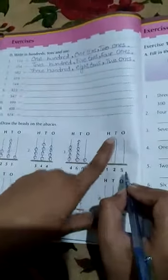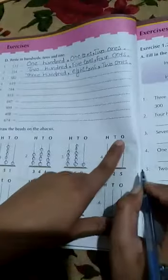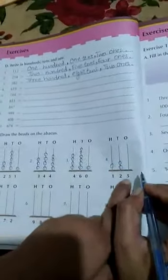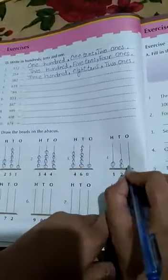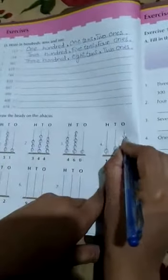Hundreds, tens and ones. Hundreds, how many are? One. Tens, how many are? Two - one, two. And ones, how many are? Five - one, two, three, four, and five.